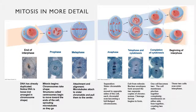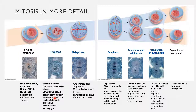In prophase, the DNA coils up into chromosome shapes. Then structures called centrosomes — shown here as gold things — start to move towards opposite ends of the cell. Like spiders making a spider web, they sprout structures called microtubules, which are going to help pull apart the chromosomes later.